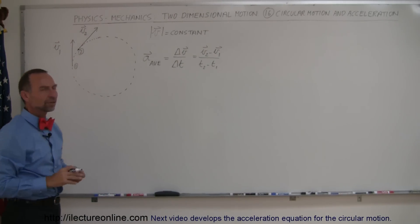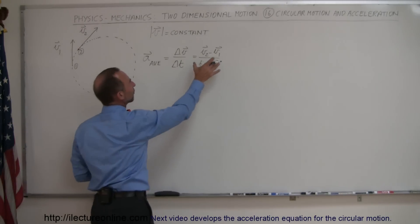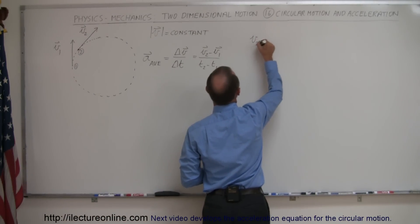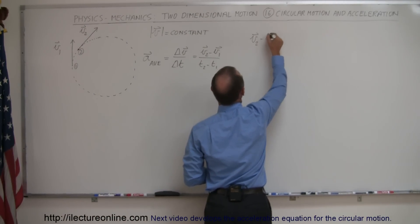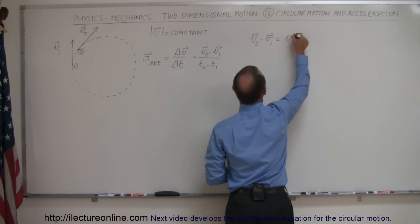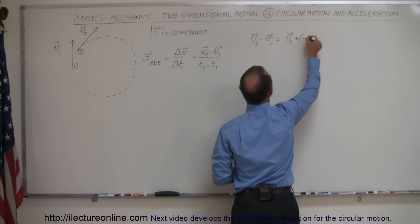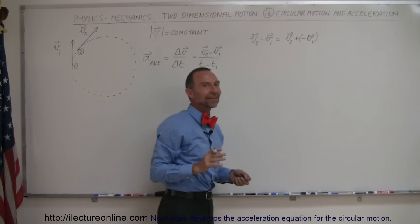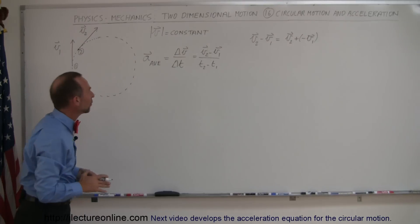Alright, now let's do that graphically. Here we have the difference of two vectors so we can write that v2 minus v1 can be written as v2 plus the negative of v1. So let's go ahead and do that, let's add v2 and the negative of v1.